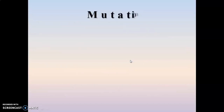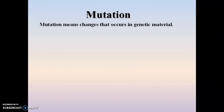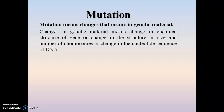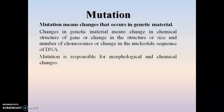We can define mutation as changes that occur in the genetic material, which includes change in the chemical structure of a gene, change in the structure, size, or number of chromosomes, or change in the nucleotide sequence of the DNA. These changes are responsible for causing mutation, which in turn causes morphological as well as chemical changes, since changes at the genetic level affect protein synthesis and further cause changes in morphological structure and chemical constituents of the plant material.